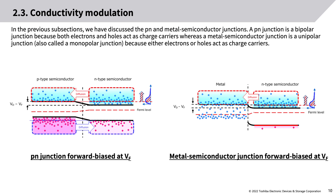Conductivity modulation: In the previous subsections, we discussed the PN and metal-semiconductor junctions. A PN junction is a bipolar junction because both electrons and holes act as charge carriers, whereas a metal-semiconductor junction is a unipolar junction (also called a monopolar junction) because either electrons or holes act as charge carriers.